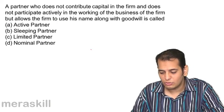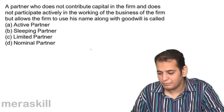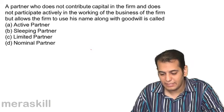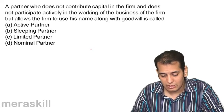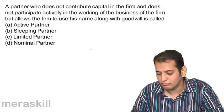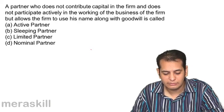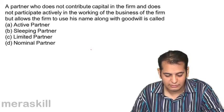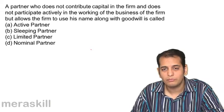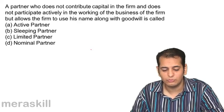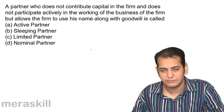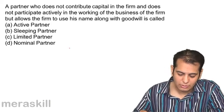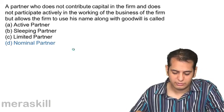A partner who does not contribute capital in the firm and does not participate actively in the working of the business of the firm, but allows the firm to use his name along with goodwill, is called: A. active partner; B. sleeping partner; C. limited partner; D. nominal partner. This is very simple — he becomes a nominal partner.